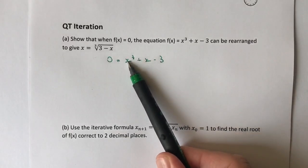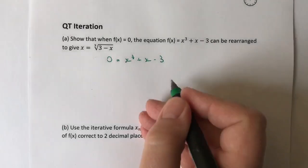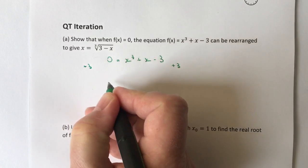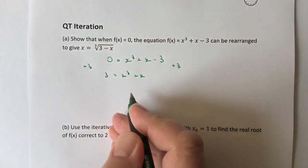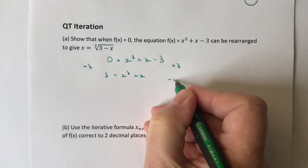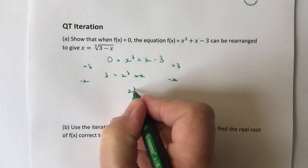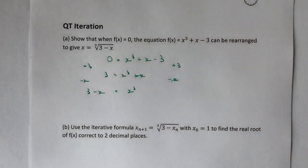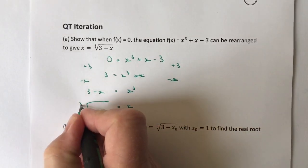I'm going to try to make this the subject, so I need to bring these two over towards the left-hand side. First, I'm going to add three to both sides: three equals x cubed plus x. Then I'm going to minus x from both sides, and I get x cubed equals three minus x.